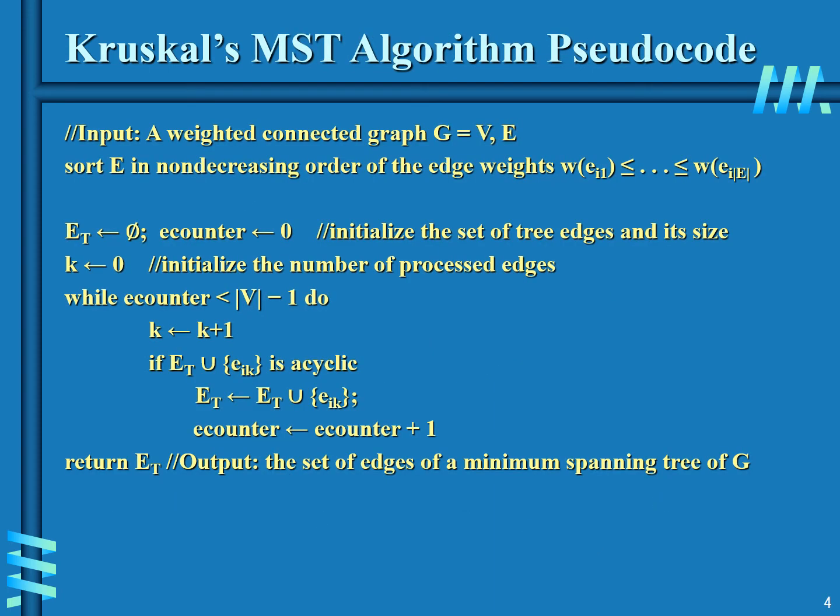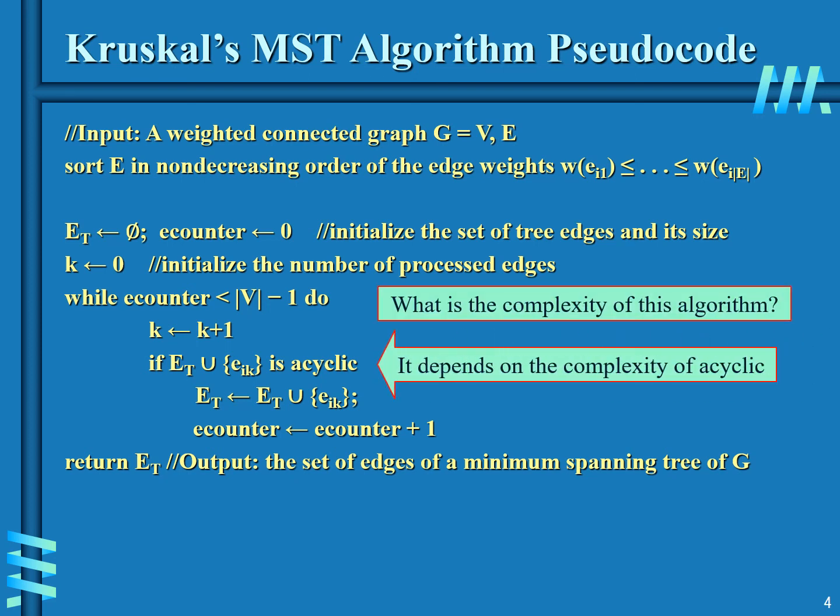Here is the pseudocode. This algorithm looks easier than Prim's but is harder to implement because we need to check for cycles. We will talk about one way of checking for cycles in the union find video.